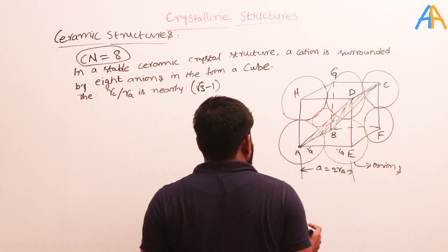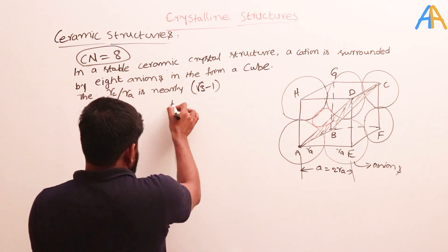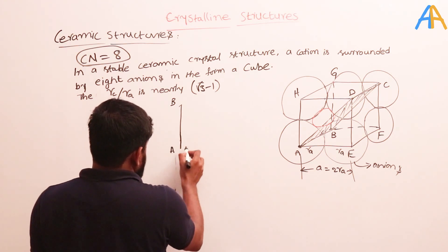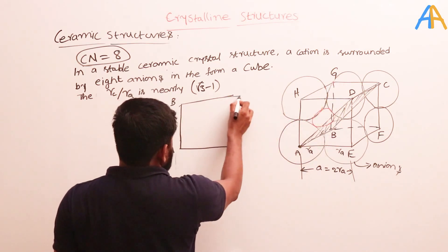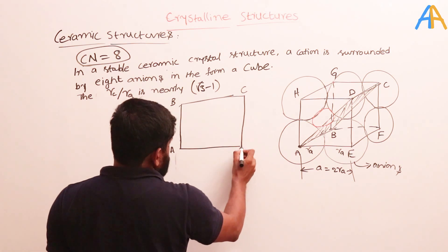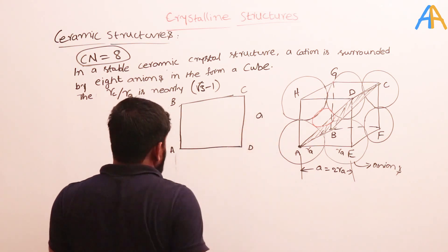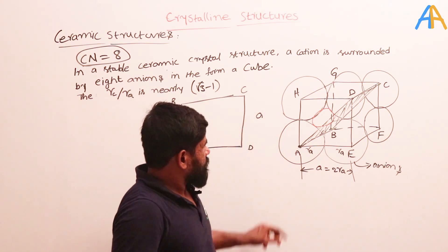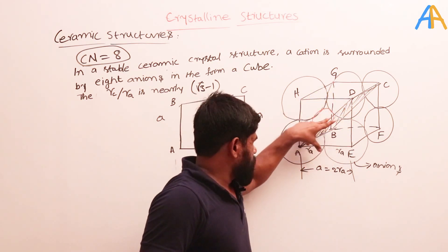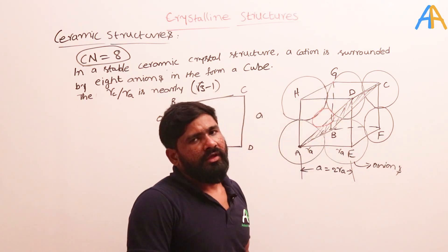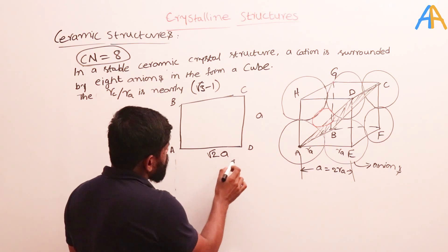This is the plane ABCD. B is joined to C, and A is joined to D. The side length AB equals a, and AD also equals a. The diagonal AD across this face: by Pythagorean theorem, x = sqrt(a² + a²) = a*root(2). So the face diagonal value is root(2)*a.